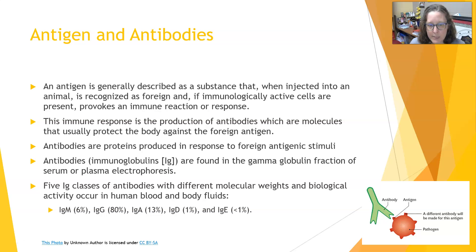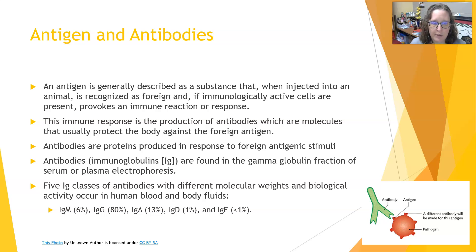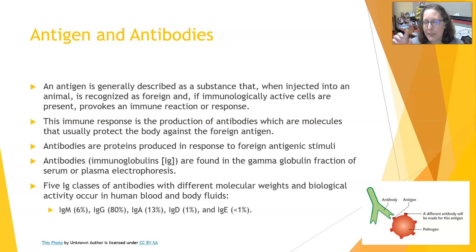Antibodies are proteins produced in response to a foreign antigenic stimulus. They are produced by B cells — B lymphocytes — that once triggered into antibody production become plasma cells. Antibodies are also known as immunoglobulins or Ig, and also as gamma globulins. This is because when you do a protein electrophoresis of serum, there are several regions — albumin, alpha, beta, and gamma — and antibodies are found in the gamma region. So gamma globulins, immunoglobulins, and antibodies are all interchangeable terms.